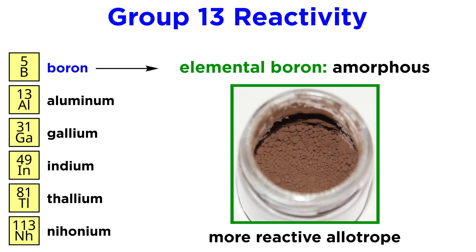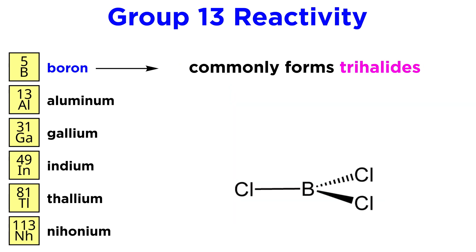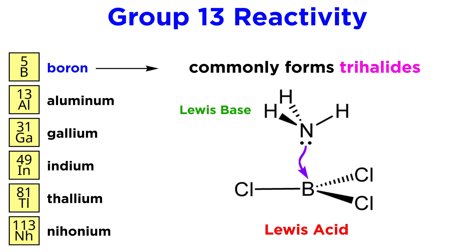Boron can also take on an amorphous form, making random networks of bonds, and this is more reactive. Boron commonly forms trihalides — compounds which are used as Lewis acids, as we may remember from organic chemistry. With these, a lone pair can be donated by a Lewis base into an empty P orbital to form a fourth bond. These bases can include amines, alcohols, water, and many others.